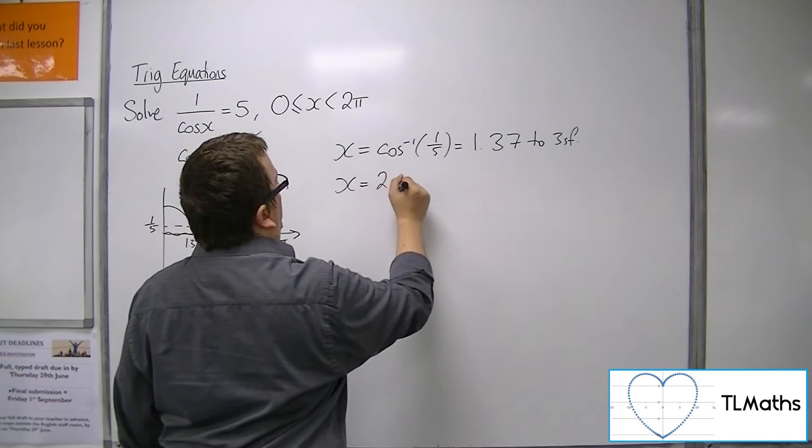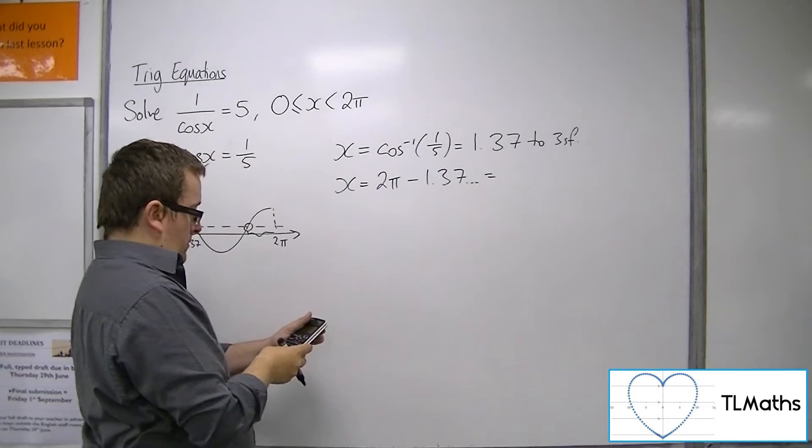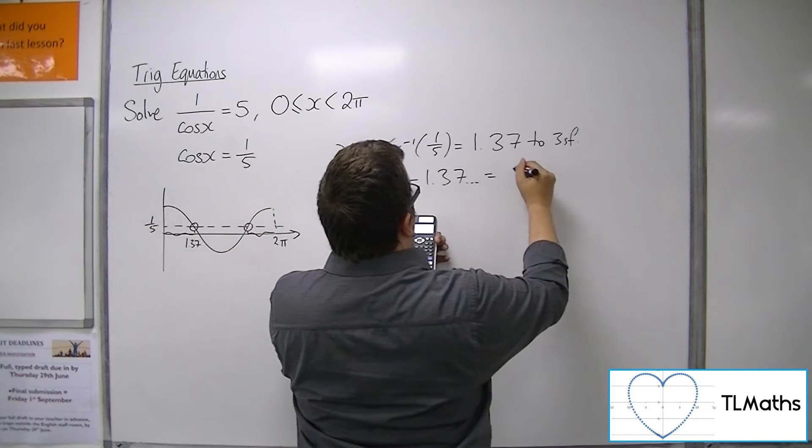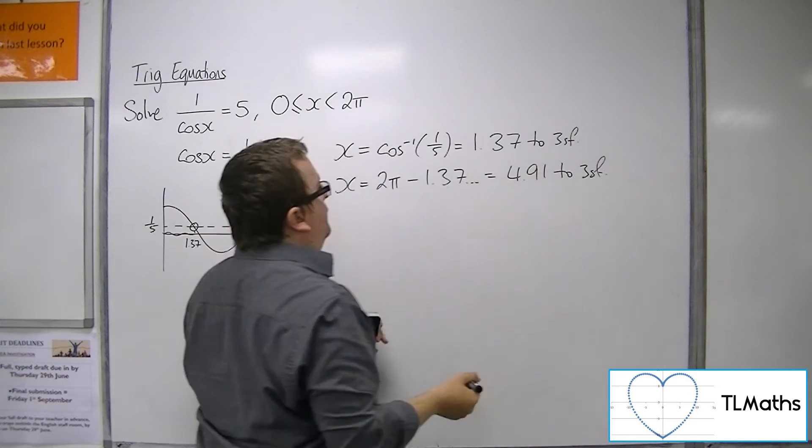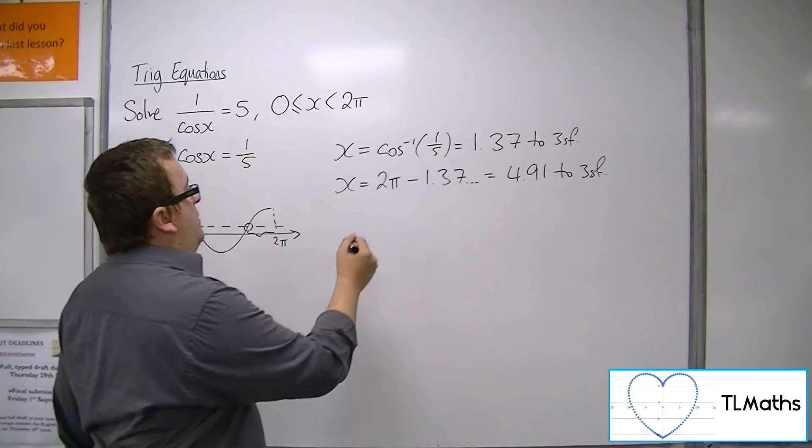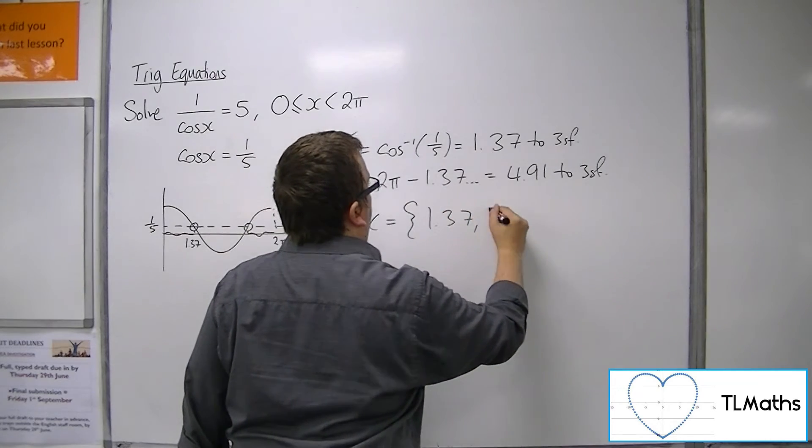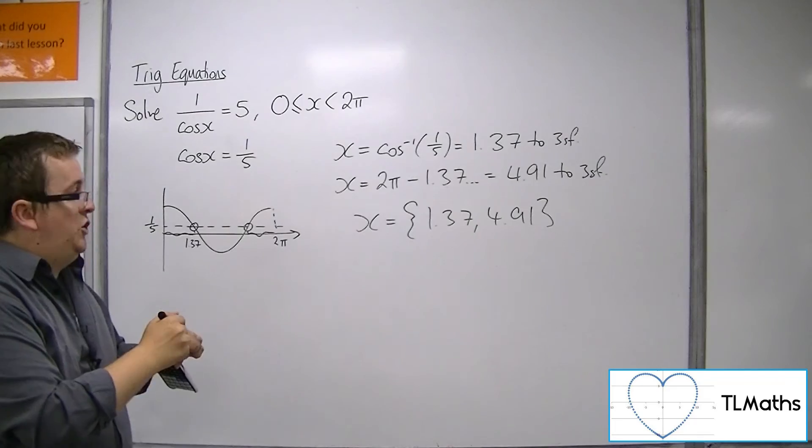So x is 2 pi, take away 1.37. 2 times pi, take away 1.37 is 4.91 to 3 significant figures. These are the two solutions between 0 and 2 pi.